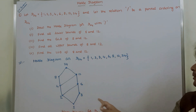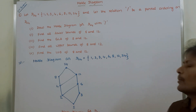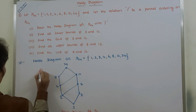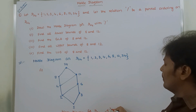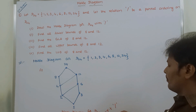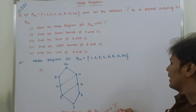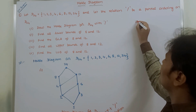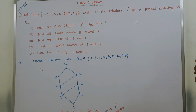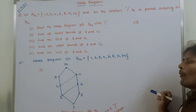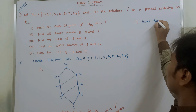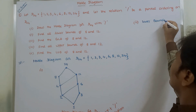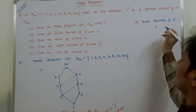The Hasse diagram for D24 with respect to the divisibility relation is now complete — that is the answer for part one. Now for part two: find all the lower bounds of 8 and 12. We first find the lower bounds of 8.